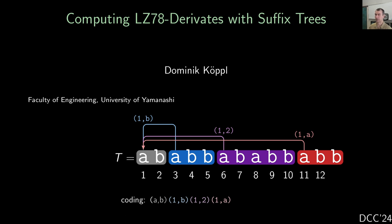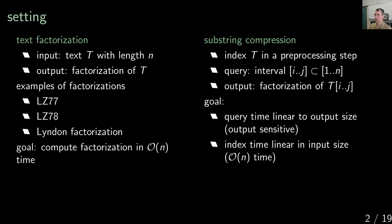Let's study how to compute LZ78 derivatives with suffix trees. Our setting is that we have a text t of length n and we want to compute the factorization of t — factorizations like the LZ77, LZ78, or the Linden factorization. The goal is to compute a factorization in linear time.